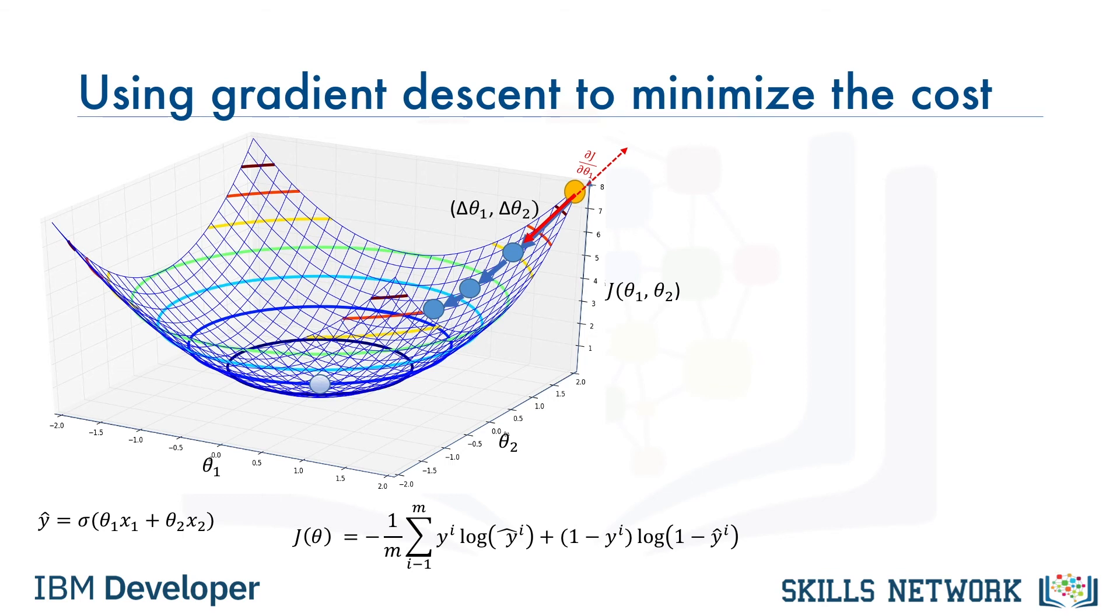The gradient value also indicates how big of a step to take. If the slope is large, we should take a large step because we are far from the minimum. If the slope is small, we should take a smaller step. Gradient descent takes increasingly smaller steps towards the minimum with each iteration.